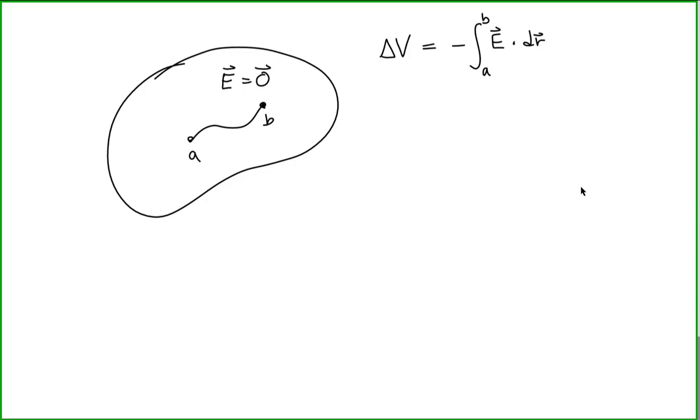This is a definite integral and we know that the electric field is equal to zero. What this means is that the change of potential or the potential difference between points A and B is equal to zero.